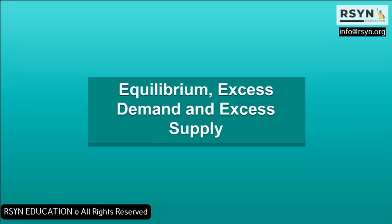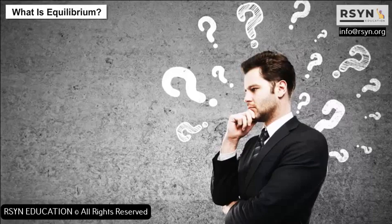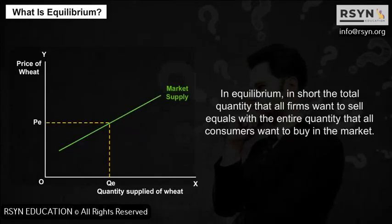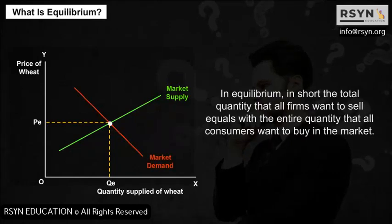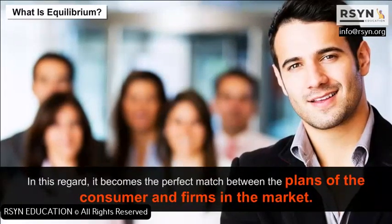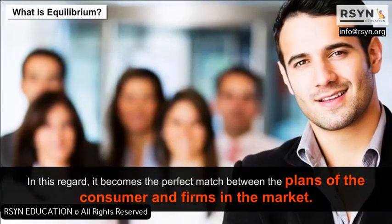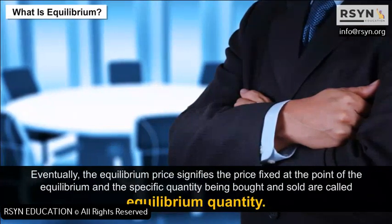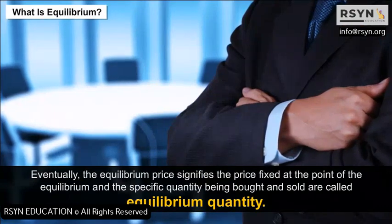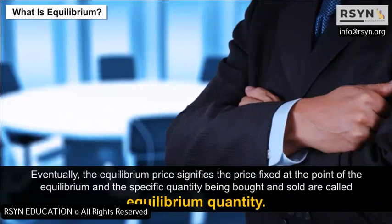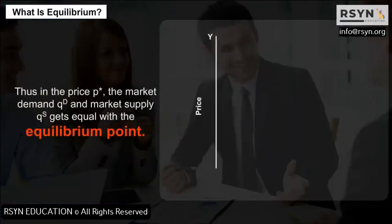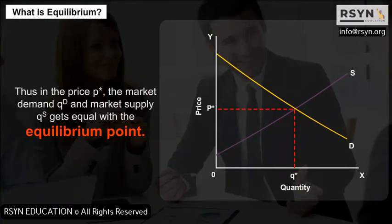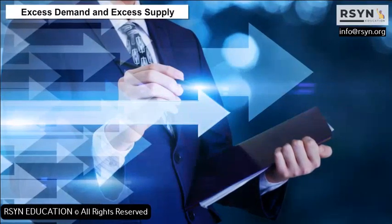Equilibrium, Excess Demand and Excess Supply: What is equilibrium? In equilibrium, the total quantity that all firms want to sell equals the entire quantity that all consumers want to buy in the market. It becomes the perfect match between the plans of consumers and firms. The equilibrium price is fixed at the point of equilibrium, and the specific quantity being bought and sold is called the equilibrium quantity. At price P, market demand QD and market supply QS are equal at the equilibrium point.